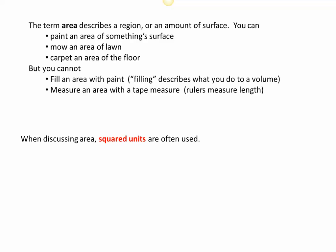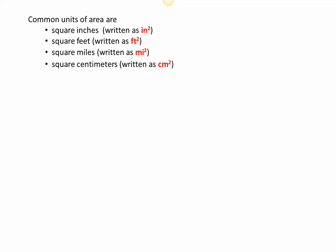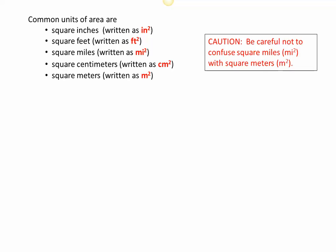When we are discussing area, we use squared units. Common units of area are square inches, written as in², which comes from inches multiplied by inches. Square feet is written as ft². Square miles as mi². Square centimeters as cm². And square meters as m². Be very careful in your notation not to abbreviate miles with an 'm', because someone else will think you mean meters, and those are of course very different.